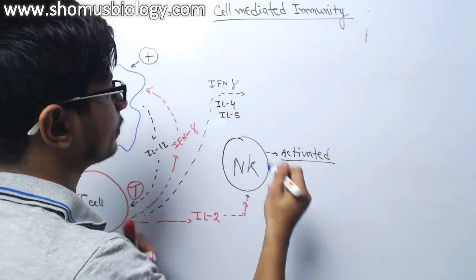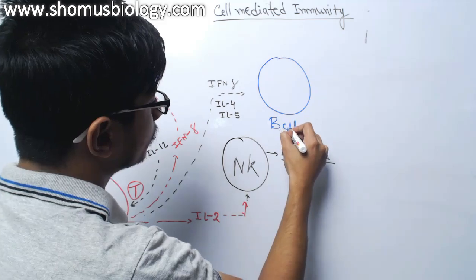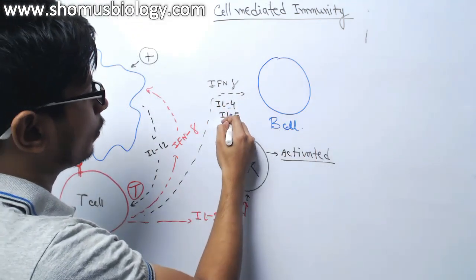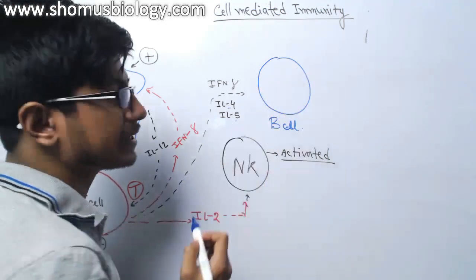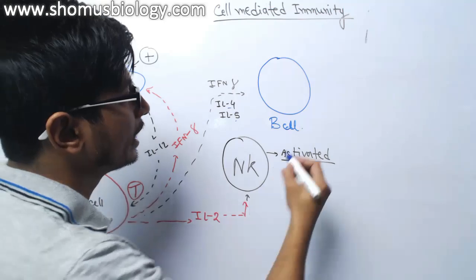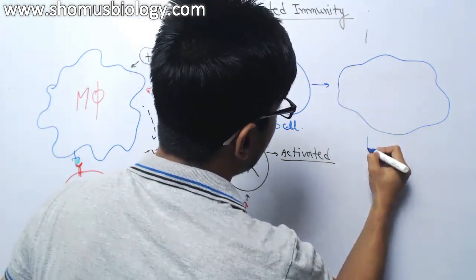Remember, there are also other type of cells present in our body known as the B-cell. So this interleukin-4 and 5, they will act on B-cells and it will signal B-cell to get matured into what we know as a plasma cell.